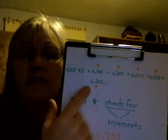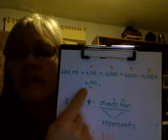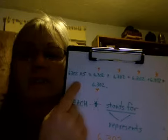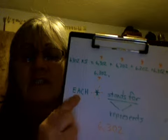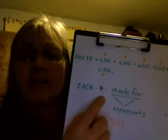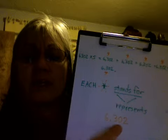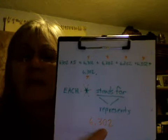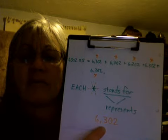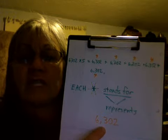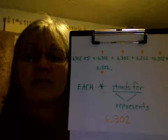It's not even required to calculate the result, the product, of 6,302 multiplied by 5, because it just asks you to find out what each snowflake represents or stands for. And after you've drawn it out in a couple of different ways, it's easy to understand that every snowflake stands for 6,302.